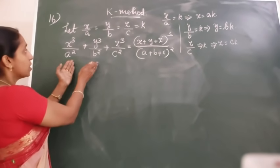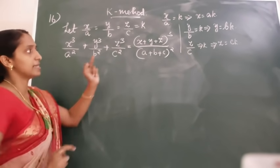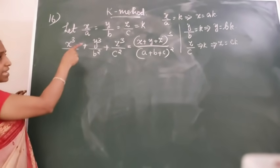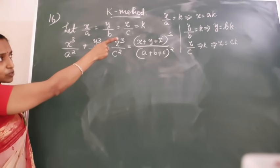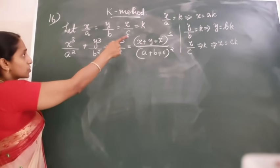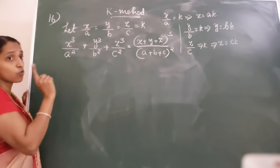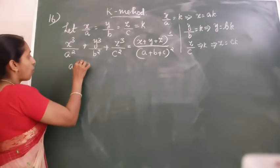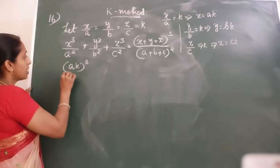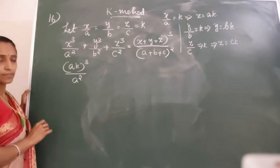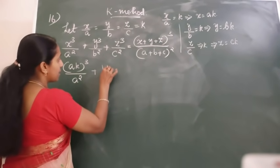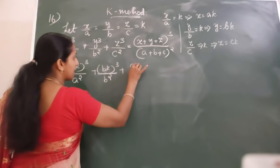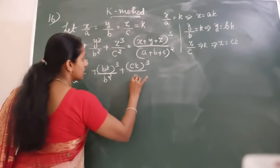Now this is our question — prove that LHS equals RHS. You will prove this by using the values of X, Y, Z. Those values we will write in the place of X. In the place of X you will write AK whole cubed upon A squared. Similarly, BK whole cubed upon B squared, and CK whole cubed upon C squared.